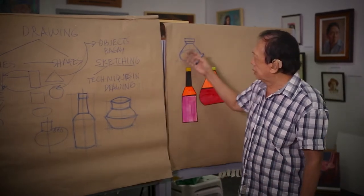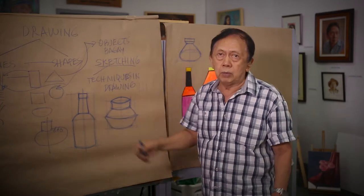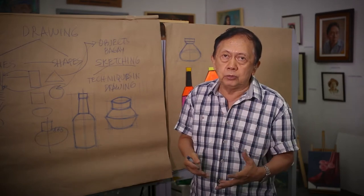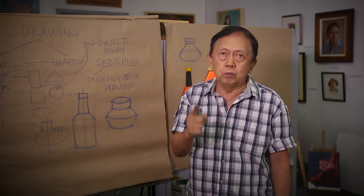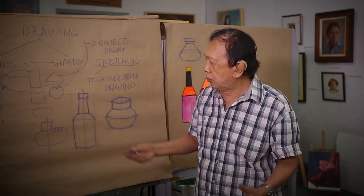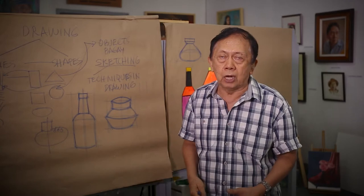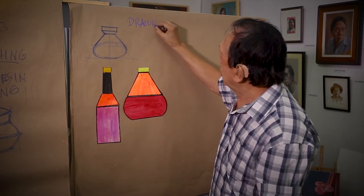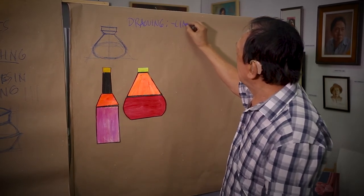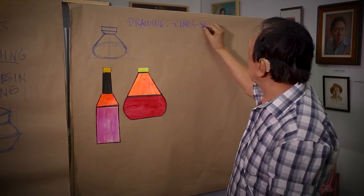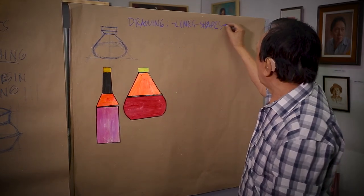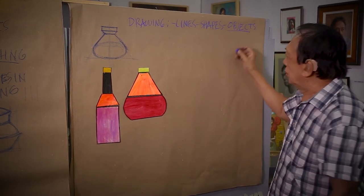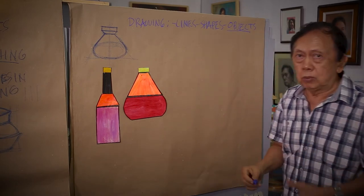Bakit tayo kailangan mag-umpisa ng sketching ng mga bote? Because bottles and bases, they have simple shape. They are simple objects with simple shape. It is in the simple objects with simple shape that we will be able to learn how to sketch all the subjects in drawing and painting. Ito yung nagsabi ko - from drawing, mag-undi siya ka ng lines. Kapatapos ng lines, shapes. Kapatapos, mag-gagawa mo na yung mga objects.